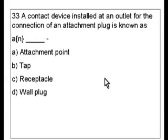Question 33. A contact device installed at an outlet for the connection of an attachment plug is known as a or an: attachment point, tap, receptacle, or wall plug.